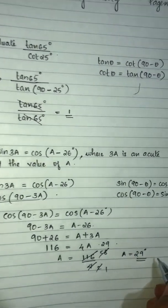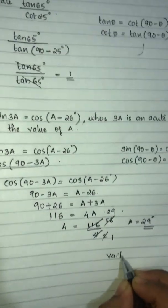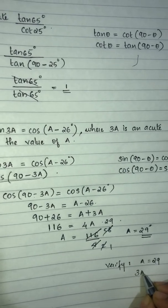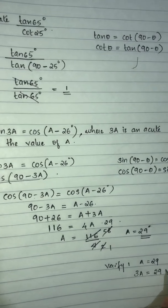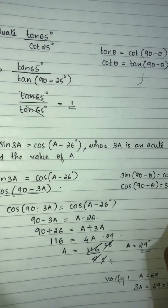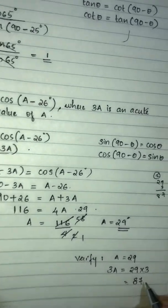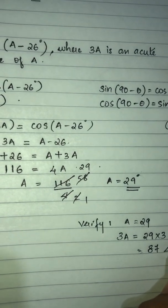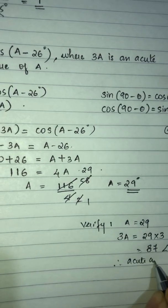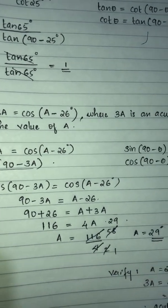The answer is correct. Let's verify: 3a is an acute angle, and a is equal to 29, so 3a equals 29 into 3, which equals 87. Since 87 is less than 90, it is an acute angle. So a equals 29 is the answer. Thank you.